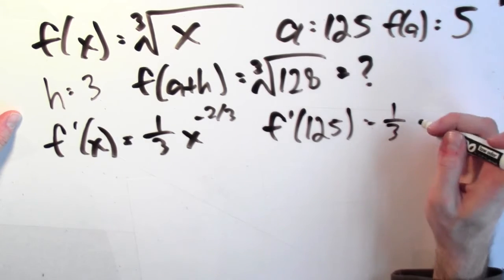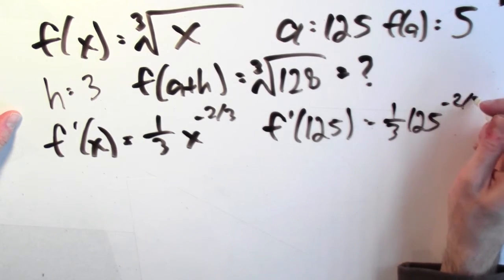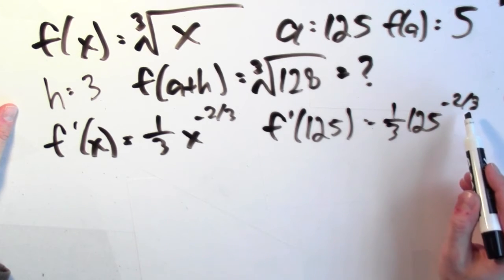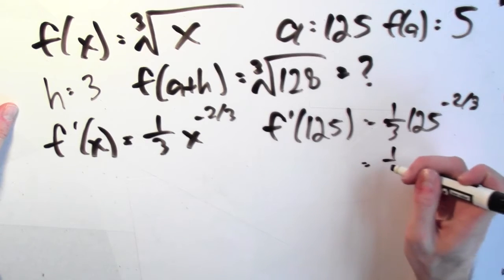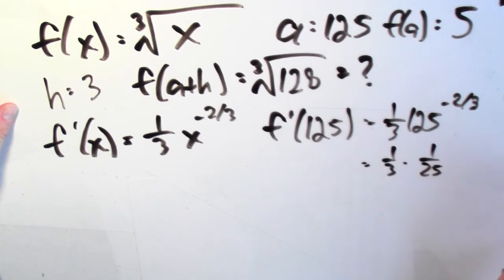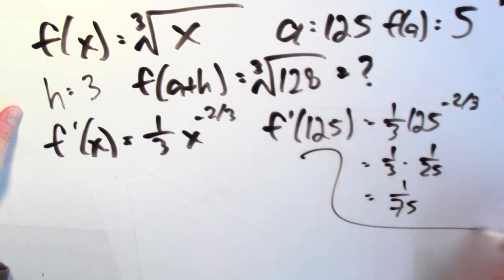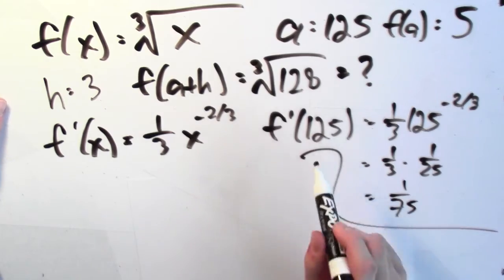That means I look at 1/3 times 125 to the -2/3 power. Well, 125 to the -2/3 power, that's 1/25. And 1/3 times 1/25, that is 1/75. So this tells me what the derivative is at 125.